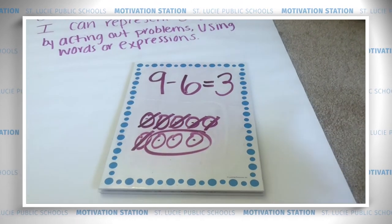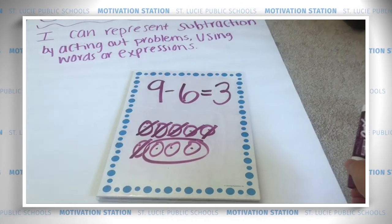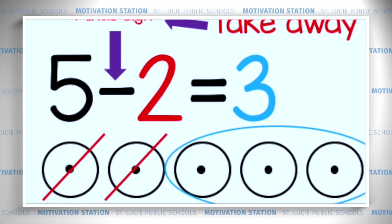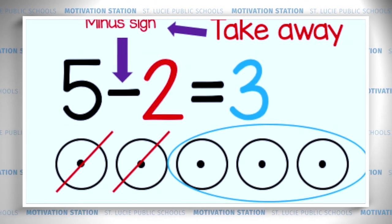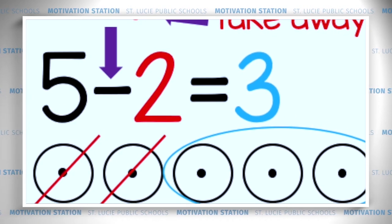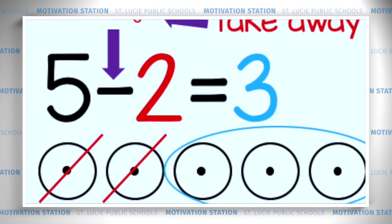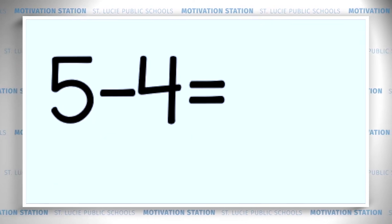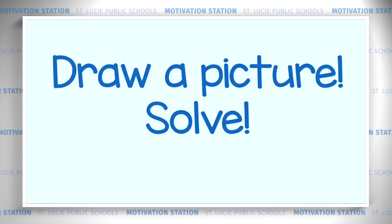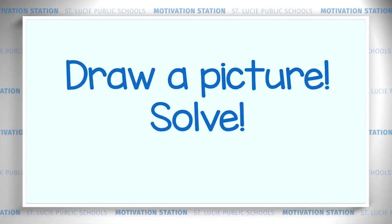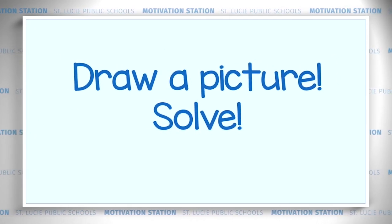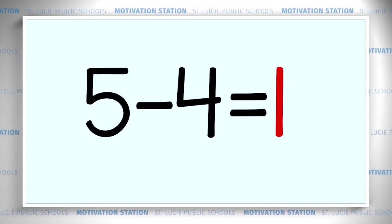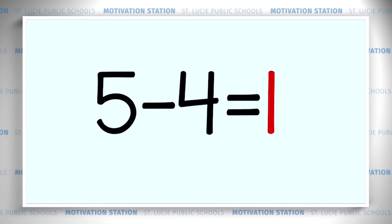Great job! Now it's your turn to practice. We're going to write equations based on some subtraction sentences. Remember to add the minus sign and your equal sign. Five minus four equals — draw a picture and solve it. The answer is one. You're right, great job!